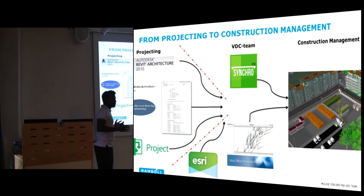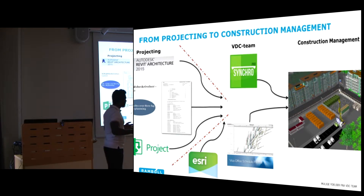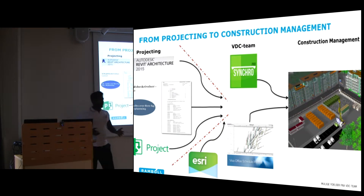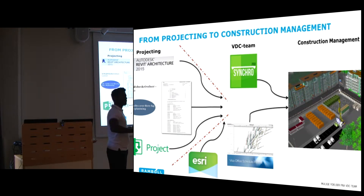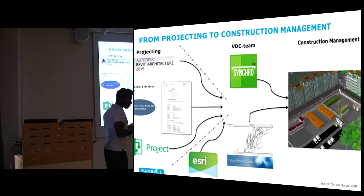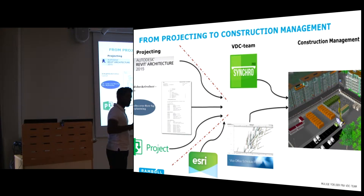And on top of all this — the cherry on the ice cream — is the GIS layer, where we take the surface and put our models on the surface, so we get the real picture of what's going on. It's not for visuality only, but also to check: is it possible to make this construction correctly?